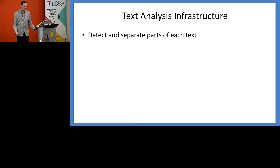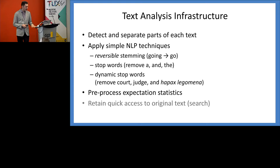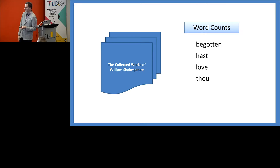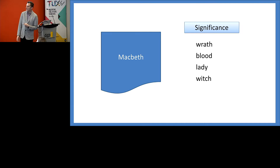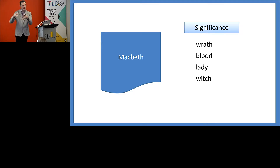We had a text analysis infrastructure that detected and separated different parts of the text — taking away the justice's name, case name, dates, and finding the actual text of the decision. We applied simple NLP techniques and pre-processed expectation statistics. If you simply count words in a document, you get common function words across all of Shakespeare and across Macbeth. But if you use an expectation statistic like the Dunning Log-Likelihood, you see that Macbeth has a very different set of words — the words that make Macbeth different from the rest of Shakespeare as a reference. We applied this same approach: each court district compared to all the others, finding words that are not just common but unusually common.